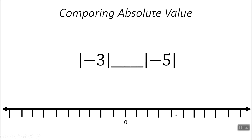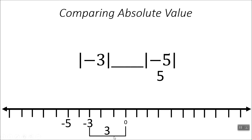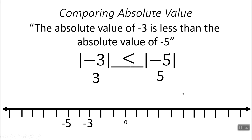Moving on — we have absolute value of negative 3 and absolute value of negative 5. We're going to go ahead and mark them both: negative 5 and negative 3. This is going to be interesting — they're on the same side of 0. But which one is further away from 0? Which one has the larger distance? Negative 5's distance from 0 is 5, and negative 3's distance is 3. So 3 compared to 5 is going to be less than. The absolute value of negative 3 is less than the absolute value of negative 5, because the distance of 3 is smaller than the distance of 5.